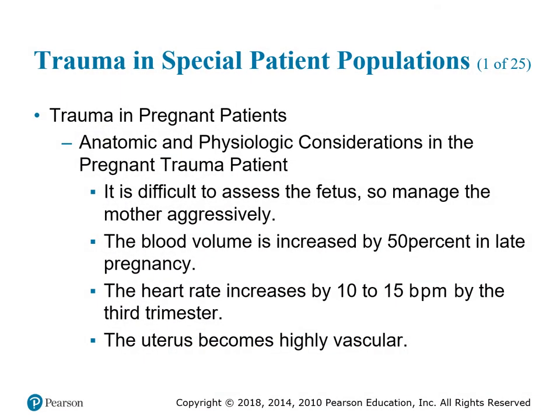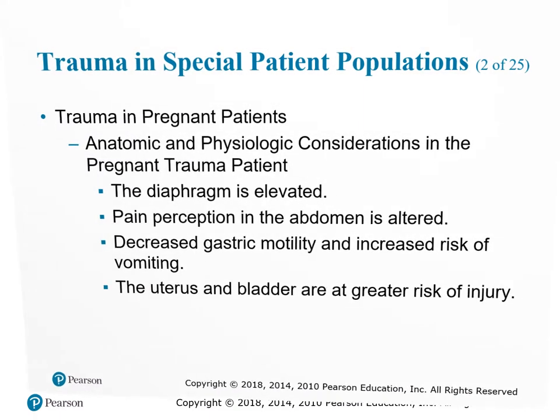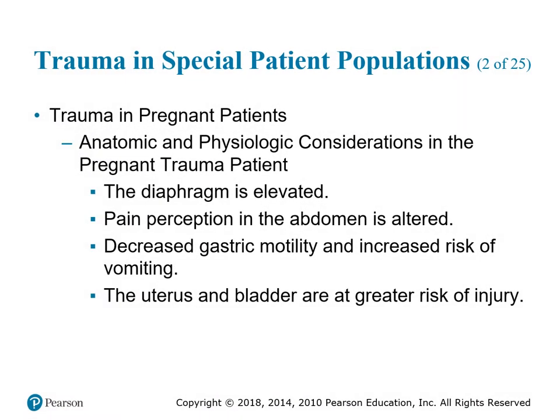Trauma in pregnant patients: anatomic and physiologic considerations. It is difficult to assess the fetus, so manage the mother aggressively. Blood volume is increased by at least 50% in late pregnancy by the third trimester. Heart rate increases by 10-15 beats per minute, and the uterus becomes highly vascular. The diaphragm is elevated, pain perception in the abdomen is altered, gastric motility is decreased, and the risk of vomiting is increased. The uterus and bladder are at greater risk of injury.